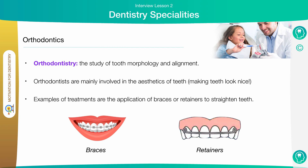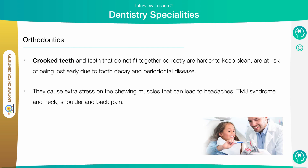Orthodontics is the study of tooth morphology and alignment. Orthodontists are mainly involved in the aesthetics of teeth, but they're also involved in the improvement of function and speech as well. Examples of treatments are the application of braces or retainers to straighten teeth. As I mentioned before in the previous slides, orthodontics don't just exist to improve the look of your teeth but can have enormous clinical benefits to the patient's quality of life as well.